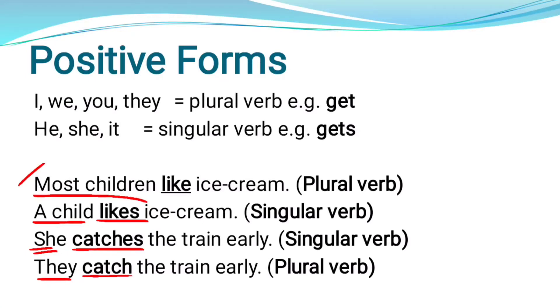In the present tense, when the subject is he, she, or it, we have to use the verb with 's' or 'es'. If the subject is I, we, you, or they — plural — we do not add 's' to the verb.